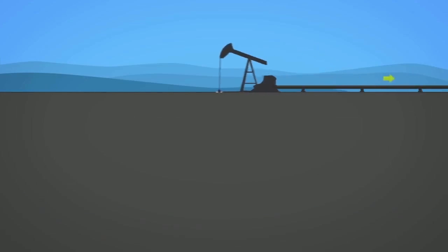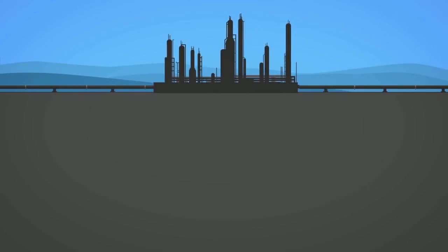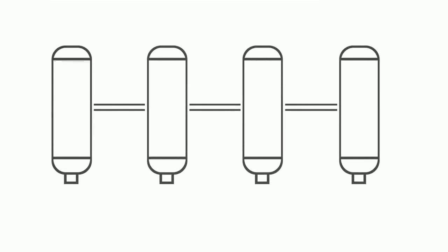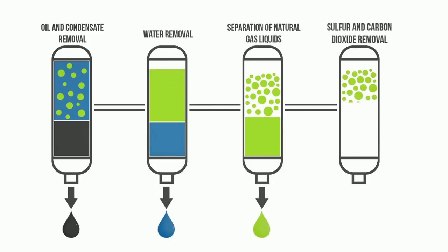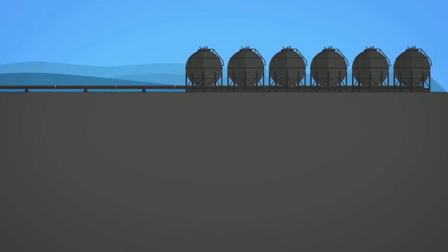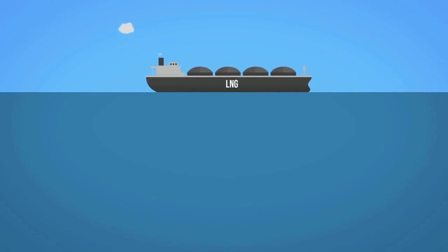Once extracted, natural gas is sent through small pipelines called gathering lines to processing plants, which separate various hydrocarbons and fluids from the pure natural gas to produce pipeline-quality dry natural gas. Processing involves four main steps: oil and condensate removal, water removal, separation of natural gas liquids, and sulfur and carbon dioxide removal. Gas is then transported through pipelines called feeders to distribution centers, or stored in underground reservoirs. In some cases, gas is liquefied for shipping in large tankers as liquefied natural gas, or LNG.